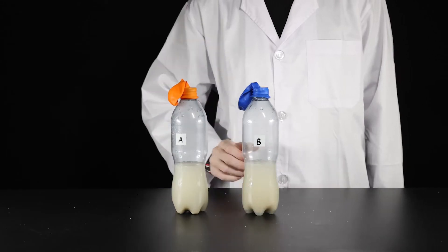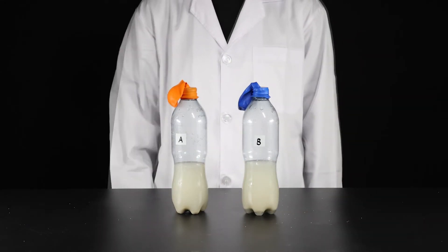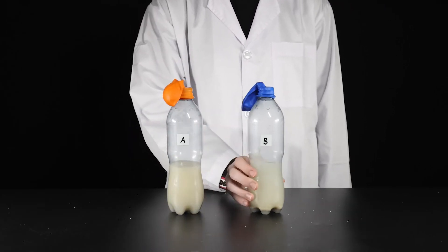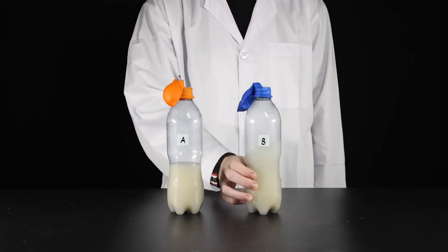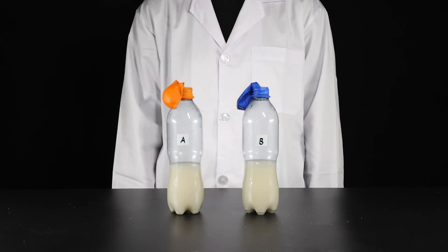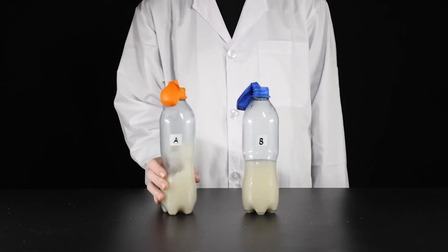When yeast cells grow and divide, they break down glucose and produce carbon dioxide and water as waste products. Carbon dioxide is produced in bottle B because the yeast has divided and multiplied due to the presence of glucose.